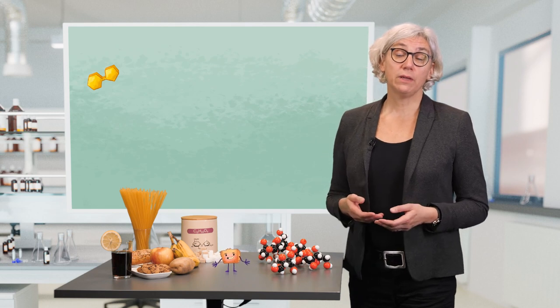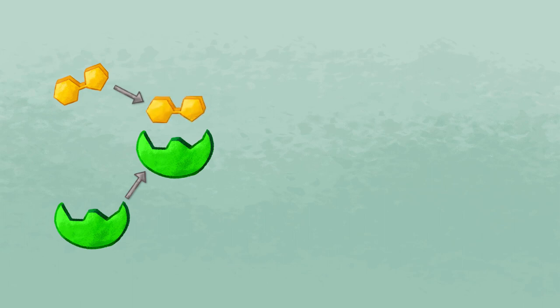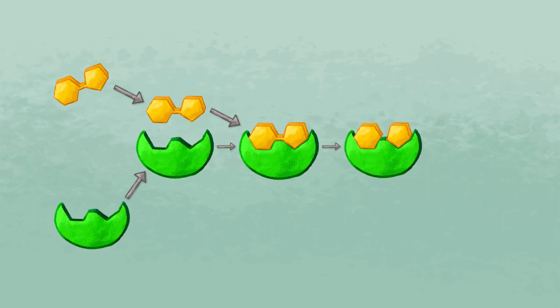When the human body wants to make use of disaccharides, the dimeric structures have to be broken down. For this cleavage, we need specific enzymes, which are synthesized by our body for this purpose, and which act as a kind of biocatalyst for these reactions. The resulting monomers can then be further resorbed and metabolized by the human body. When we consume sucrose or lactose, the disaccharide has first to be broken down into the monosaccharides, and then we can resorb glucose.